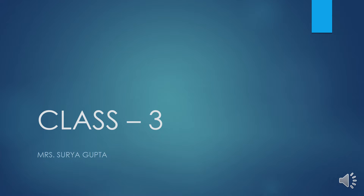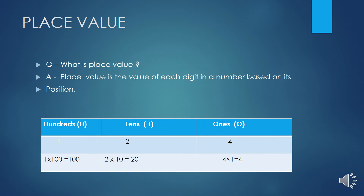Good morning students. Today we will discuss about place value. What is place value? Place value is the value of each digit in a number based on its position. Place value wo value digit hi hoti hai jo uski position pe depend kerti hai.